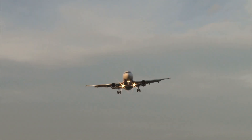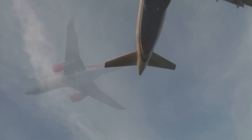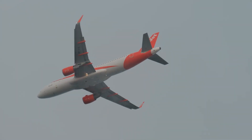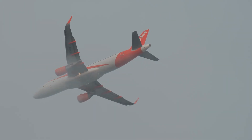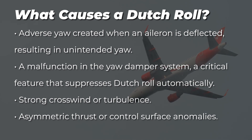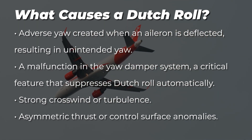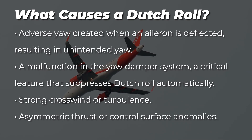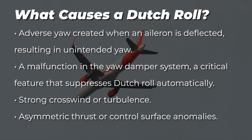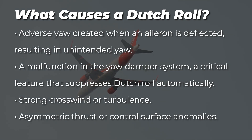The primary cause of a Dutch roll is an imbalance in stability between yaw and roll. Many swept-wing aircraft, including modern commercial jets, are prone to Dutch roll due to their design. Contributing factors include adverse yaw created when an aileron is deflected resulting in unintended yaw, a malfunction in the yaw damper system — a critical feature that suppresses Dutch roll automatically — strong crosswind or turbulence, and asymmetric thrust or control surface anomalies.